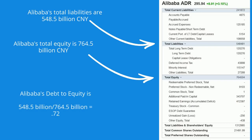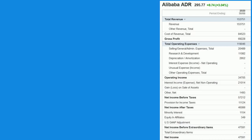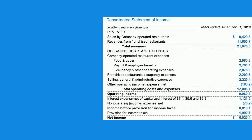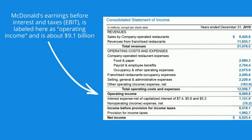Alibaba has no net interest expense — in fact it's making money on interest in its financing operations. Let's look at McDonald's. McDonald's EBIT, labeled as operating income, is about $9.1 billion, and its interest expense is about $1.1 billion, so McDonald's TIE is about 8.3, suggesting McDonald's can easily cover its interest expense.